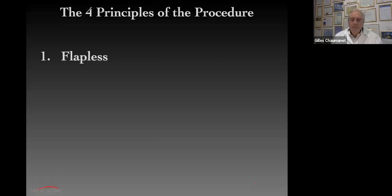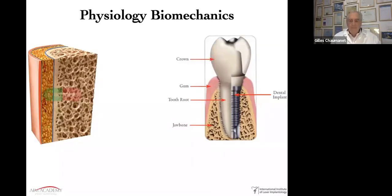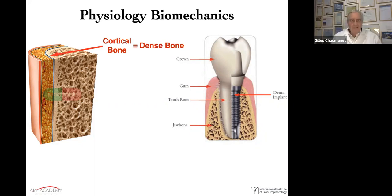What are the four main principles of minimally invasive surgery? First of all, the flapless approach. Let me explain this through biology and the nature of the bone itself. In a cross-section of a long bone, we have the cortical bone — known as the dense bone — which can be bent to a certain point, known as a greenstick fracture. This dense bone is very strong and resistant but also very delicate due to its vascularization.